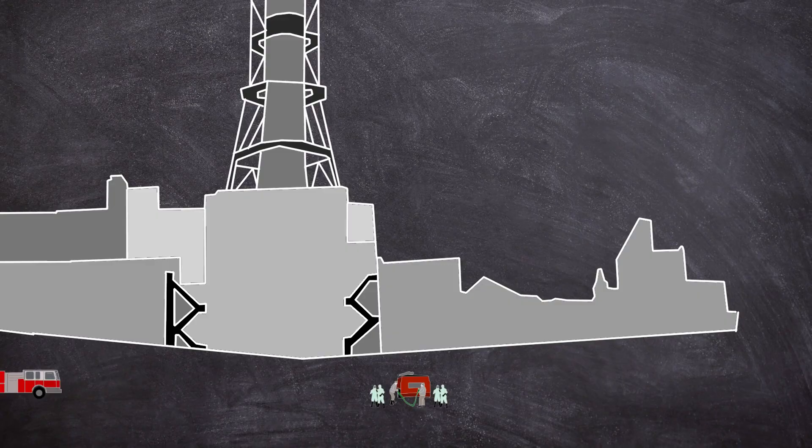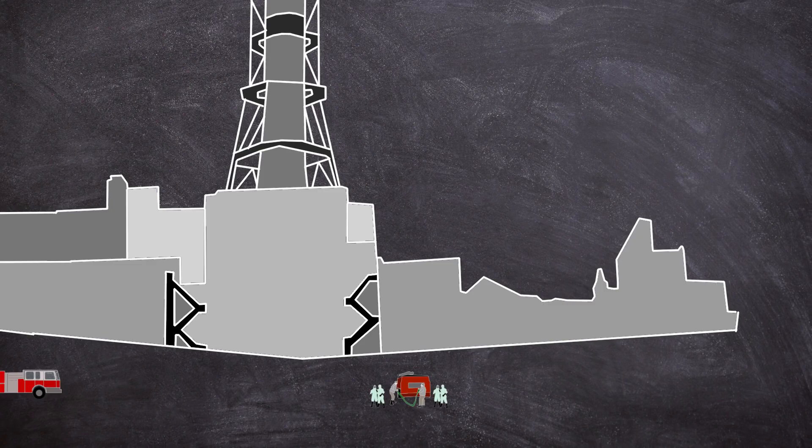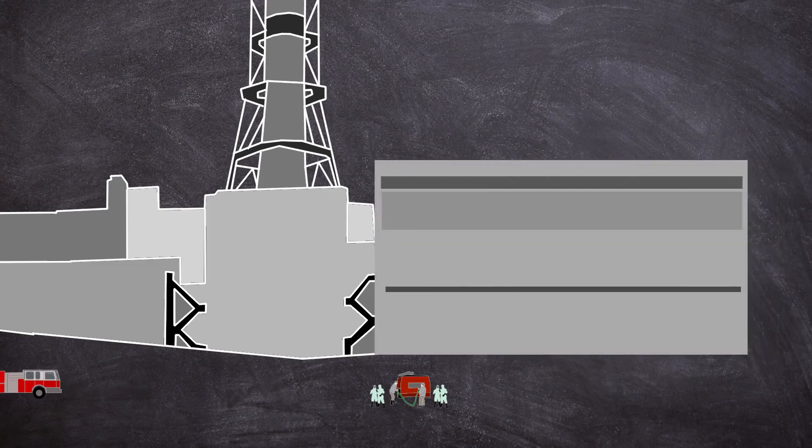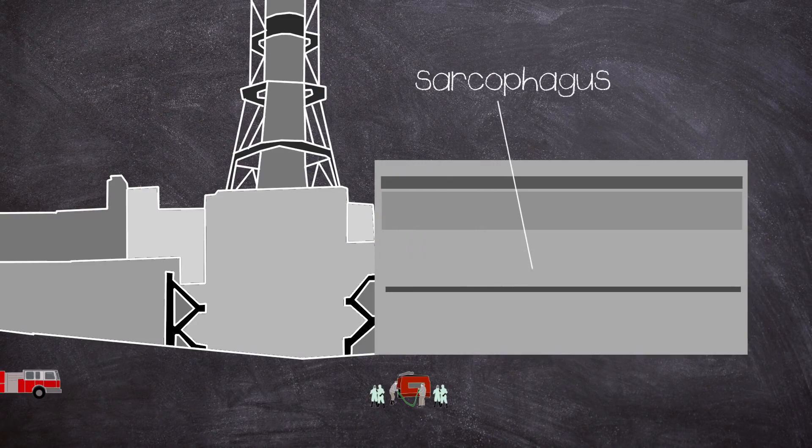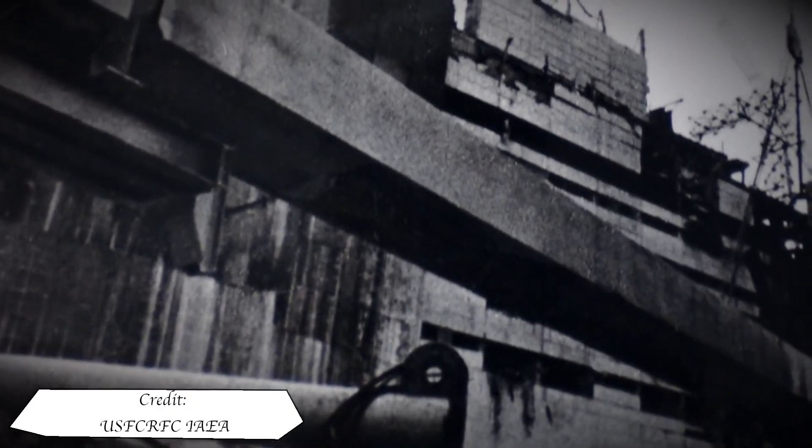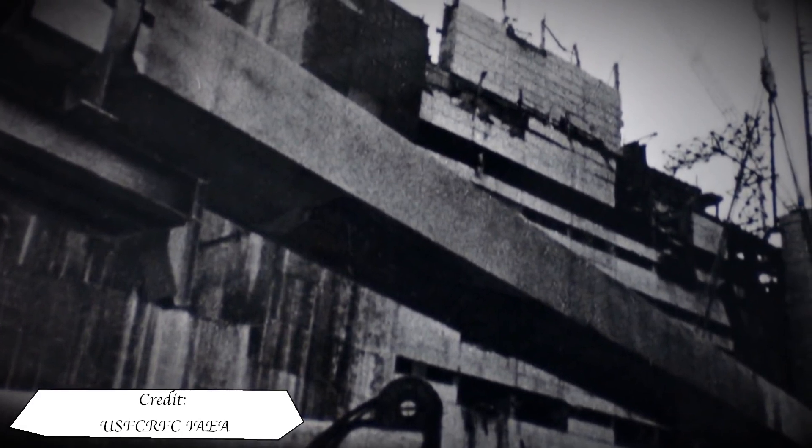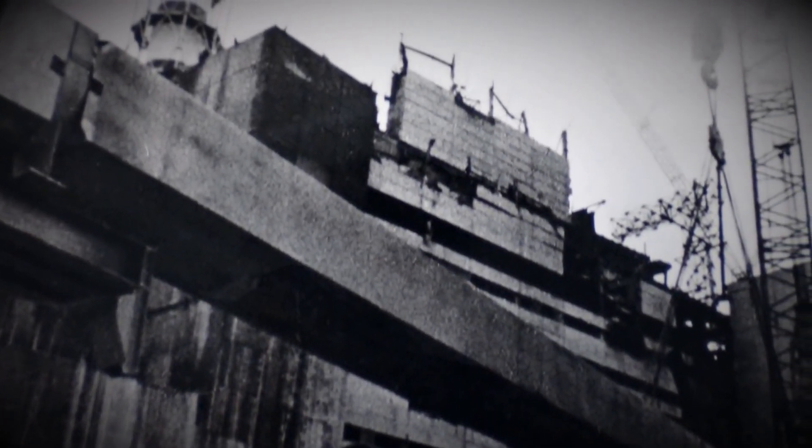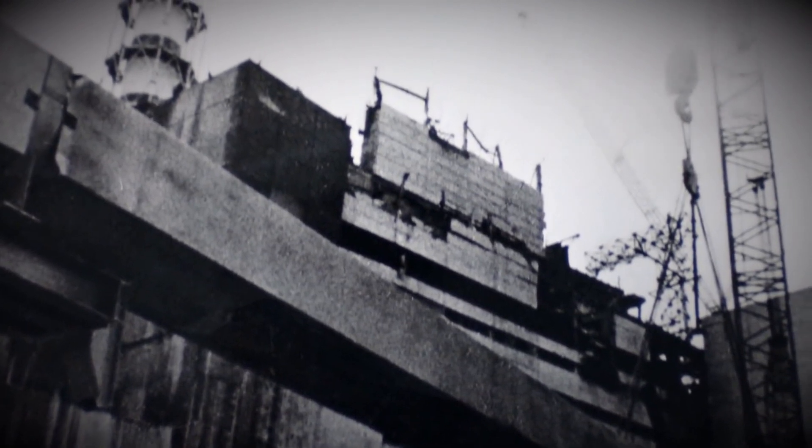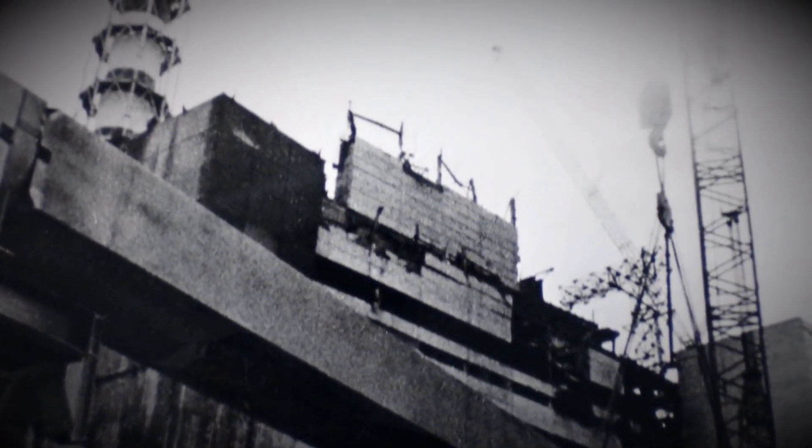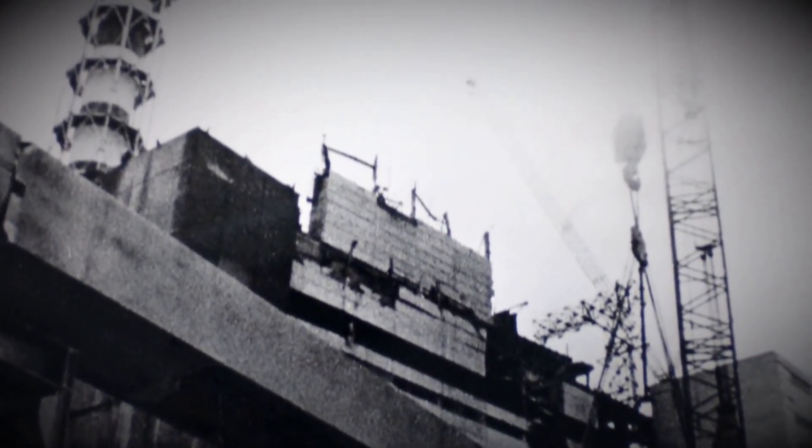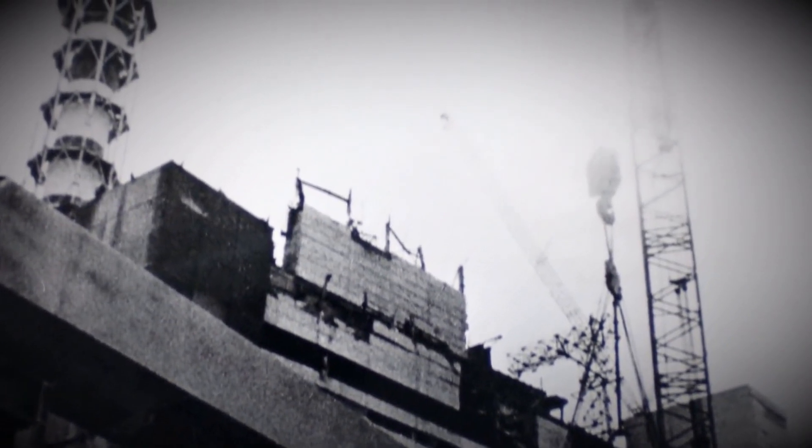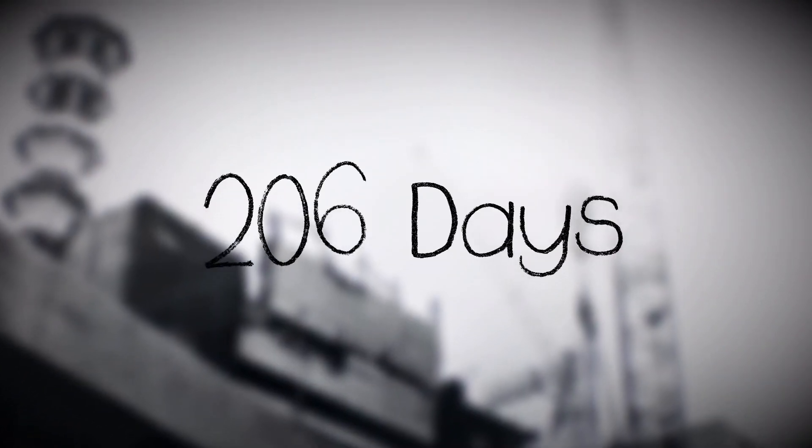A plan was conceived to contain the contamination release of unit 4 in the form of a concrete lid which would come to be known as the sarcophagus. Construction began in May 1986, 24 days after the disaster, to encapsulate some 200 tons of radioactive corium, 30 tons of highly contaminated dust, and 16 tons of uranium and plutonium. The construction would last for 206 days between June to late November of the same year.